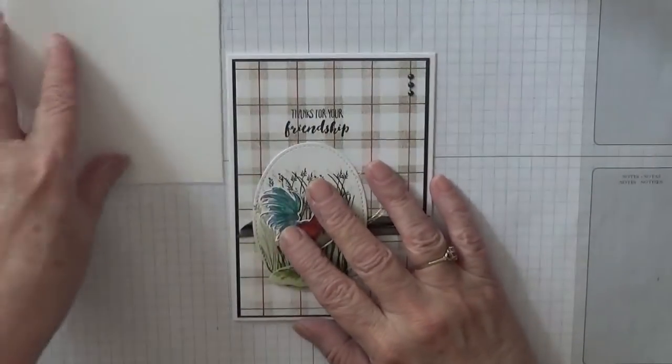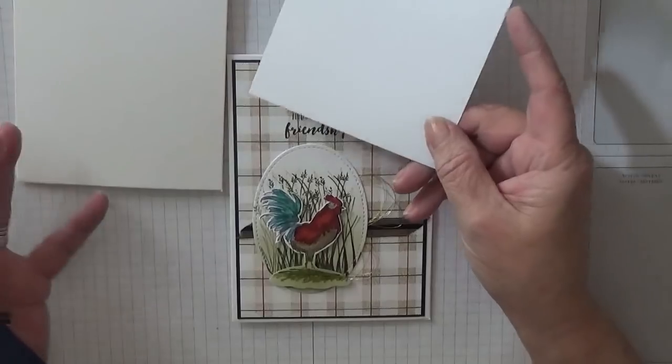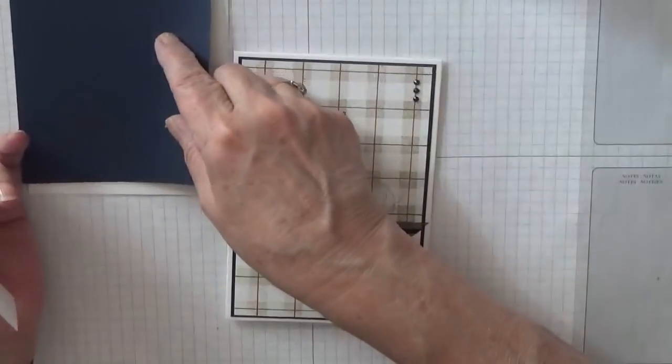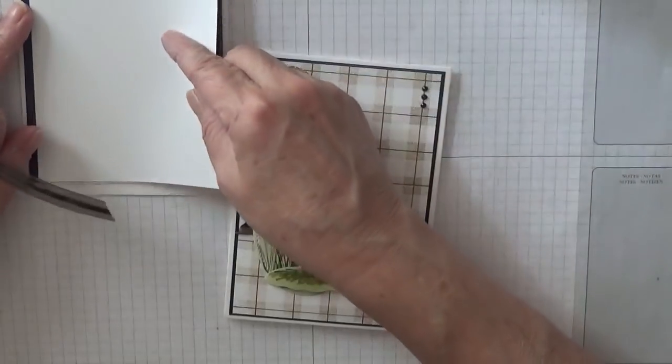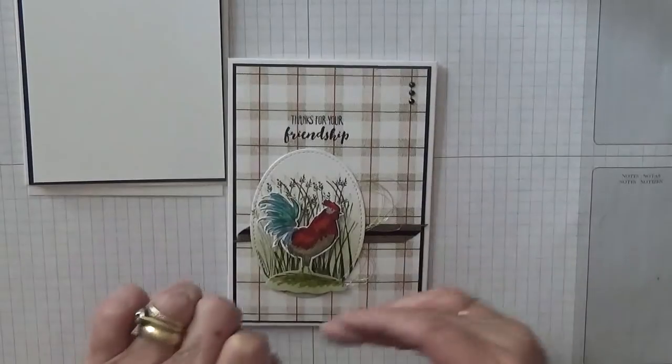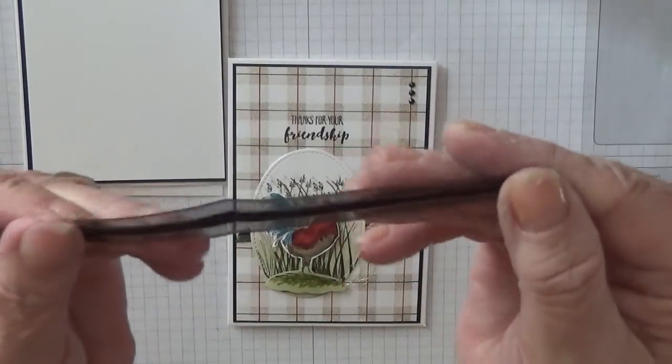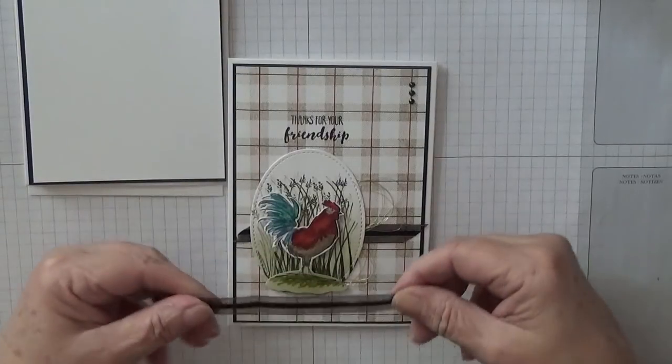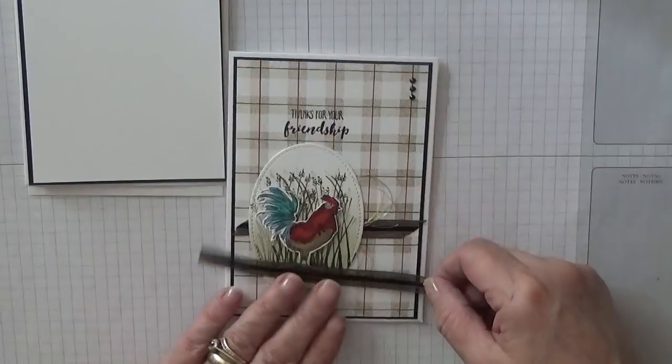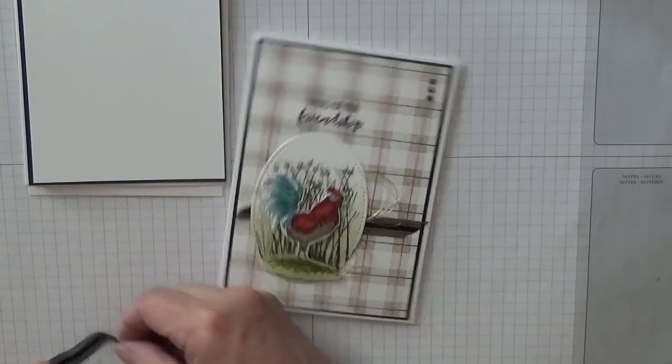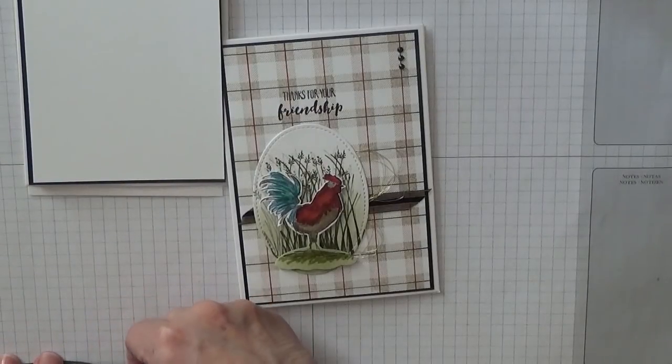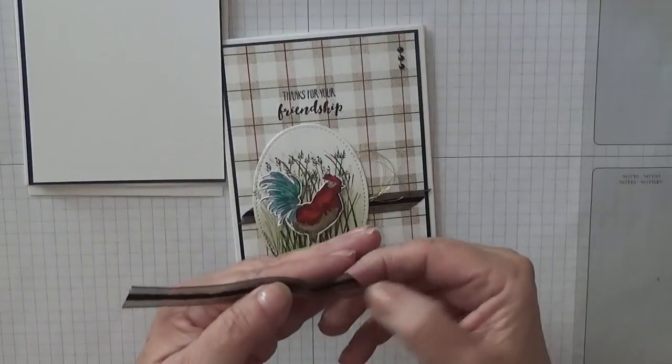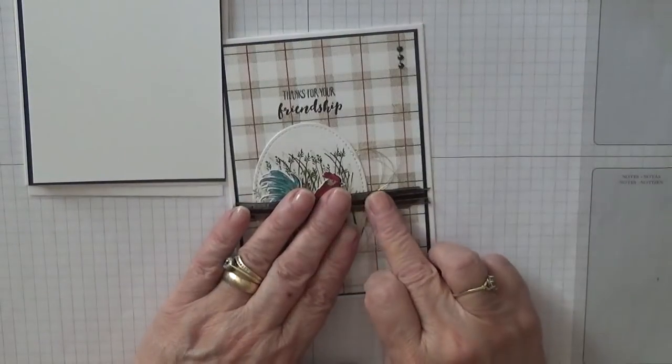To make this card I used a card base of eight and a quarter by five and seven-eighths, scored at four and one-eighth, folding in half. A piece of white cardstock at five and five-eighths by three and seven-eighths for the inside. A piece of Night of Navy at five and five-eighths by three and seven-eighths. A piece of white cardstock at five and a half by three and three-quarters, and a piece of gold and black ribbon. For that you'll need about four and one-eighth, so this needs cutting down. I just cut each end at an angle.